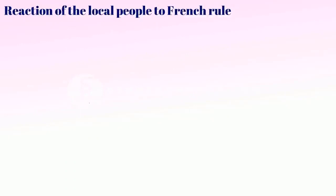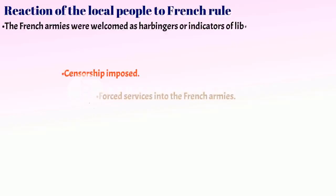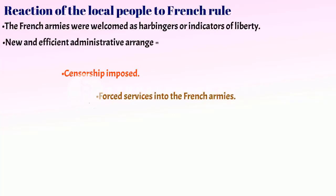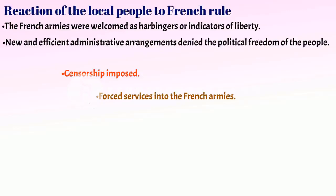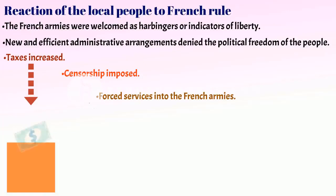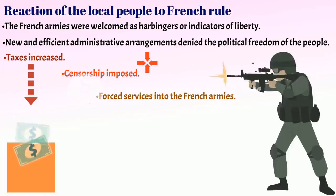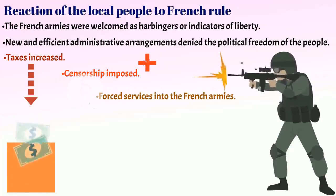Talking about the reaction of local people to French rule: initially, in many places such as Holland and Switzerland, the French armies were welcomed as harbingers — indicators of liberty. But soon, people realized that these new and efficient administrative arrangements made by Napoleon came at the cost of compromised political freedom — meaning it denied the political freedom of the people. Increased taxation, censorship, forced service in the French army required to conquer the rest of Europe all seemed to outweigh the advantages of the administrative changes introduced by him.